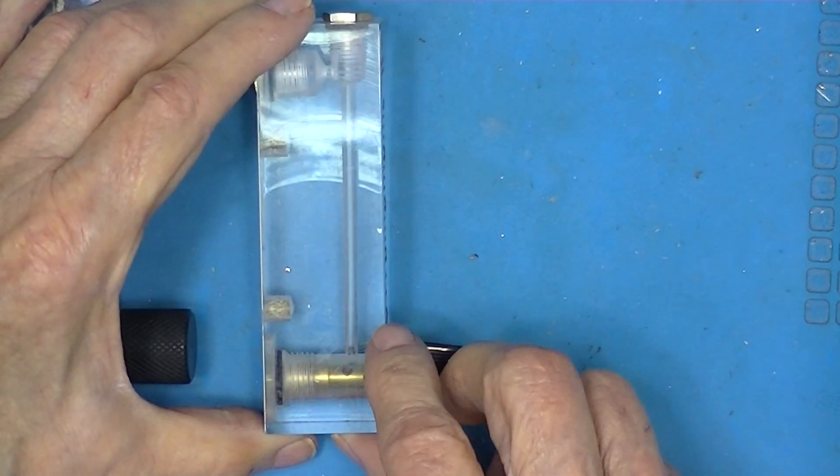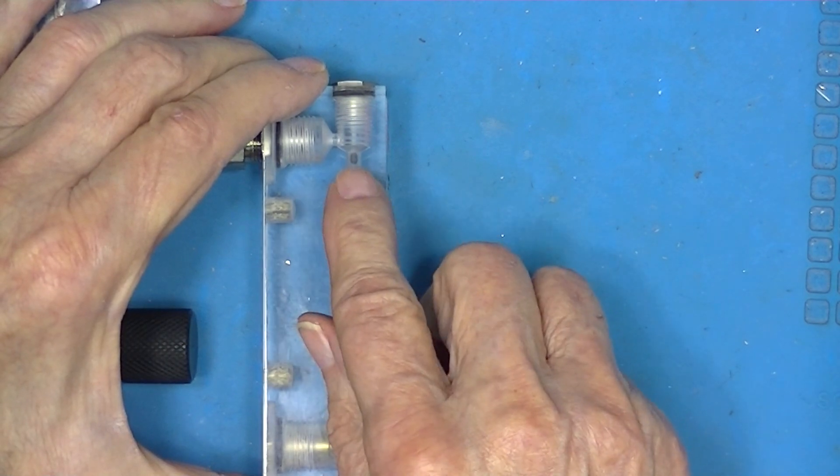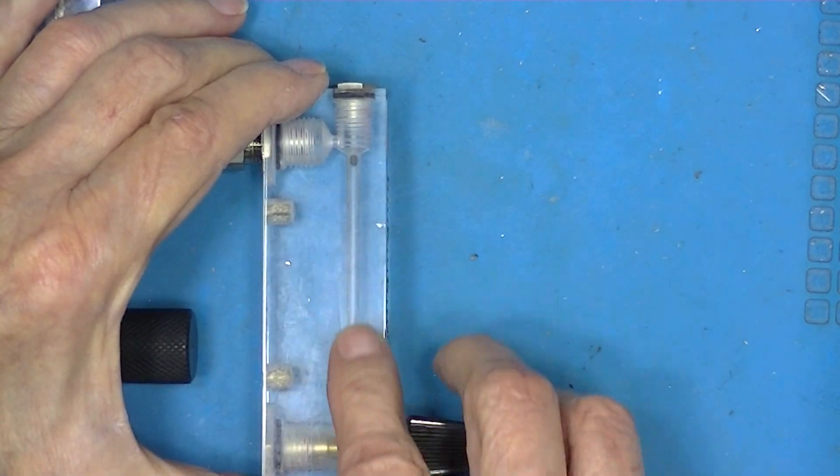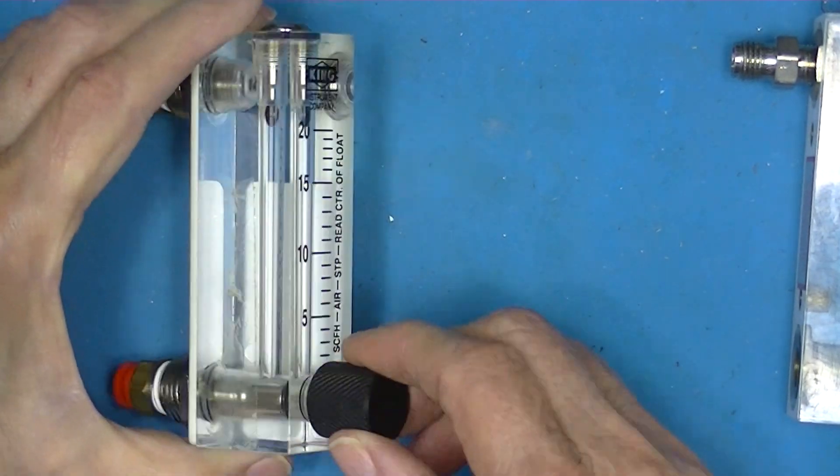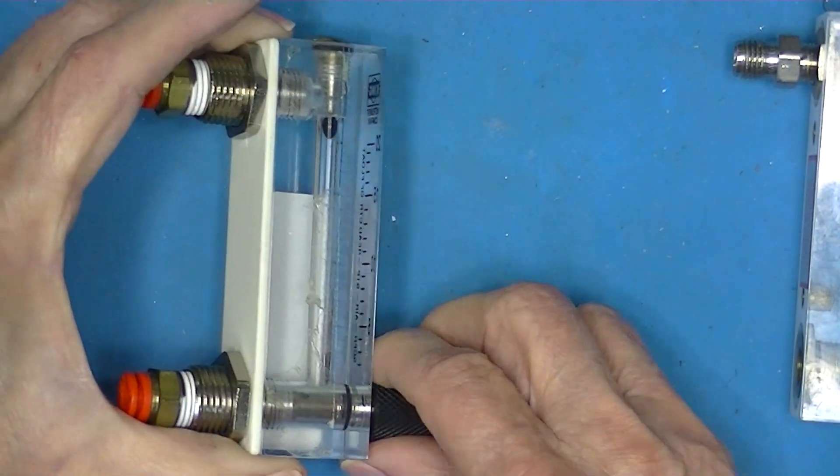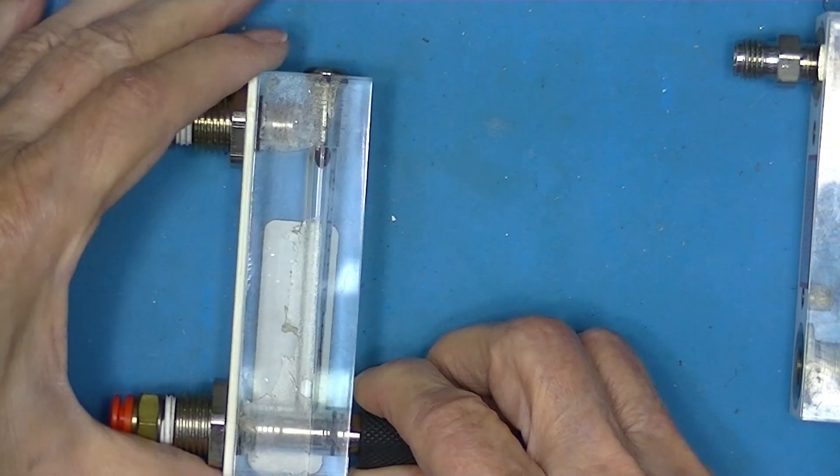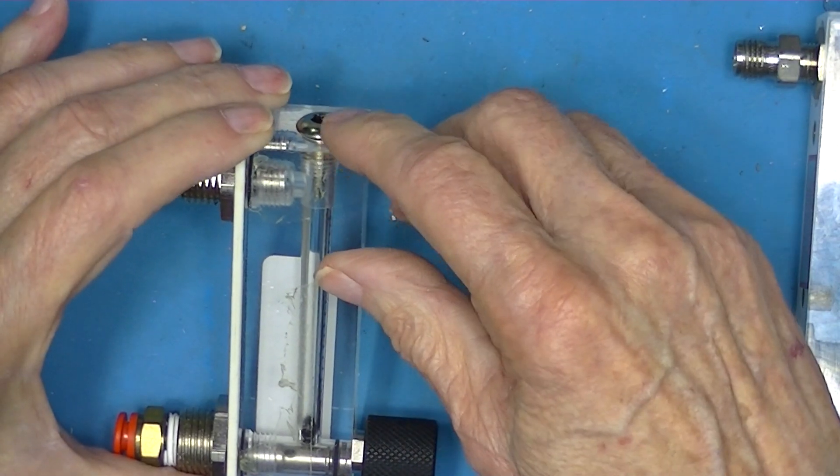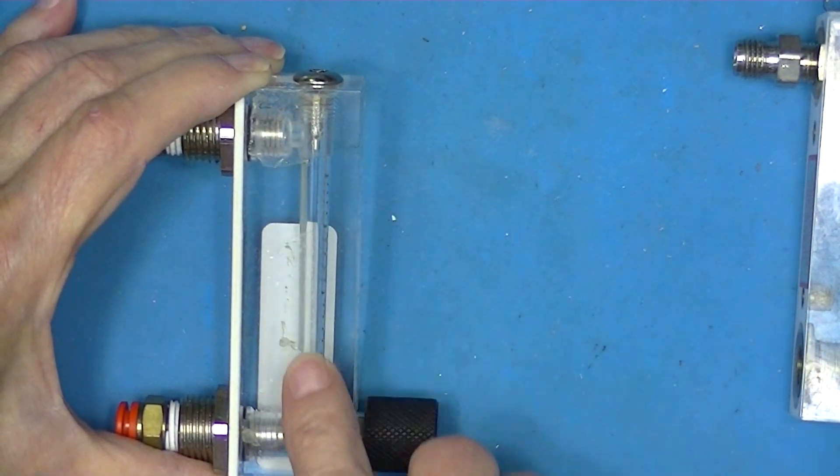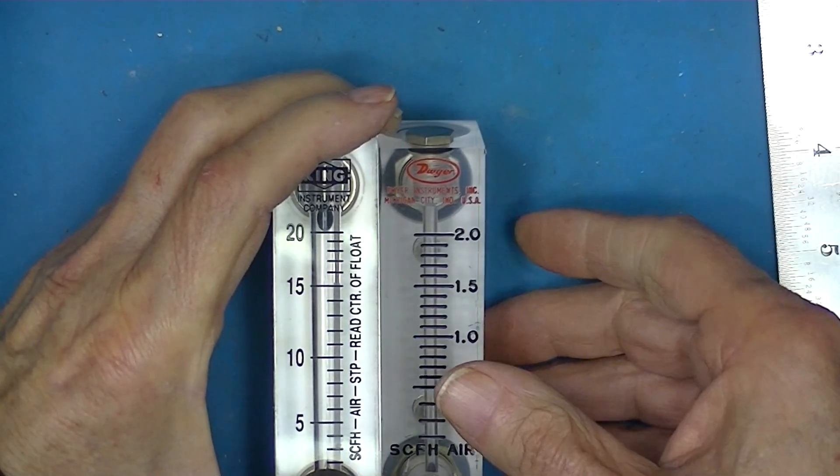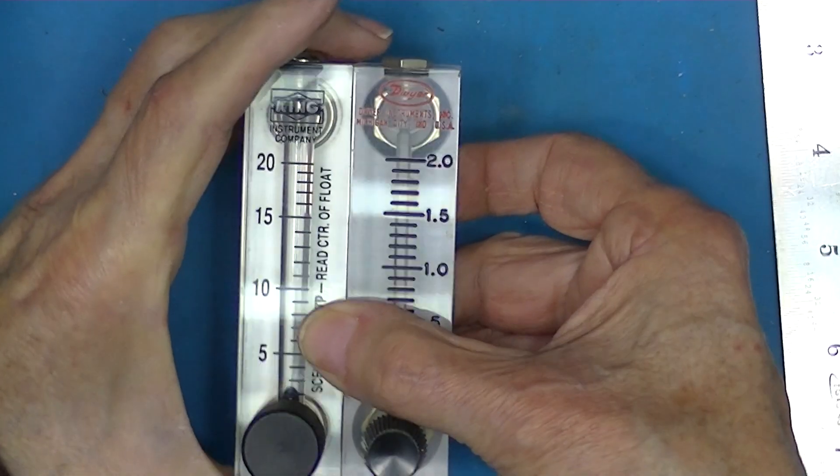Again, this King Instruments one has a rate setting valve, and flow enters at the bottom, exits at the top, and we have the remnants of the hole that the mandrel or reamer was installed in. I'm not sure if these weren't actually both manufactured by the same company.